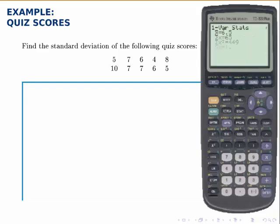Hit enter, and enter again. A lot of things are listed: the mean is 6.5, the sum of the data points, the sum of the squared data points. Then notice for our purposes, we have S sub X, which is the standard deviation.